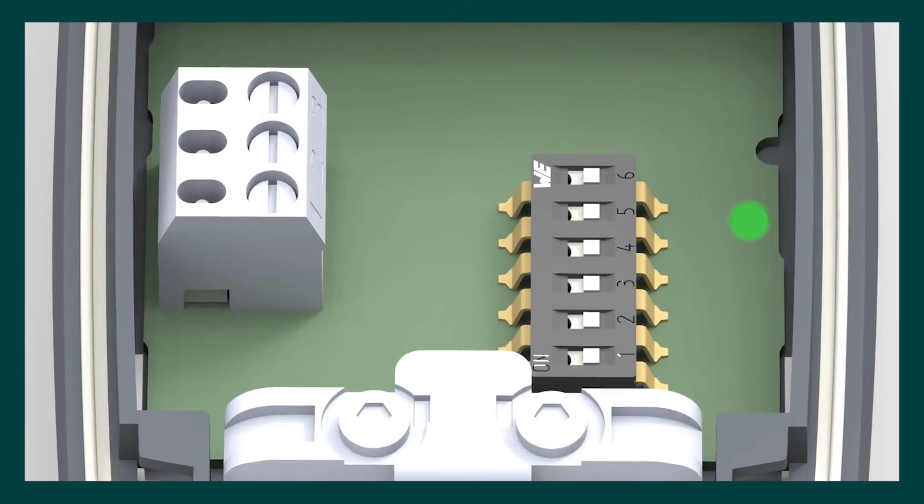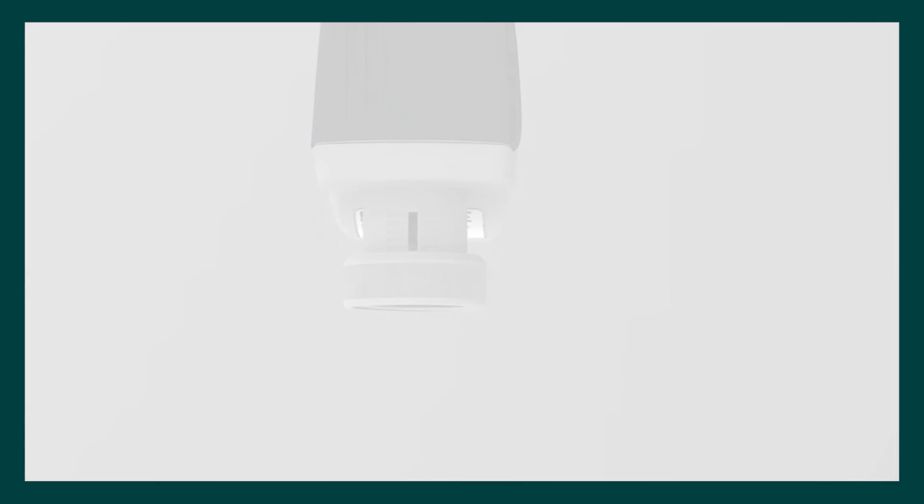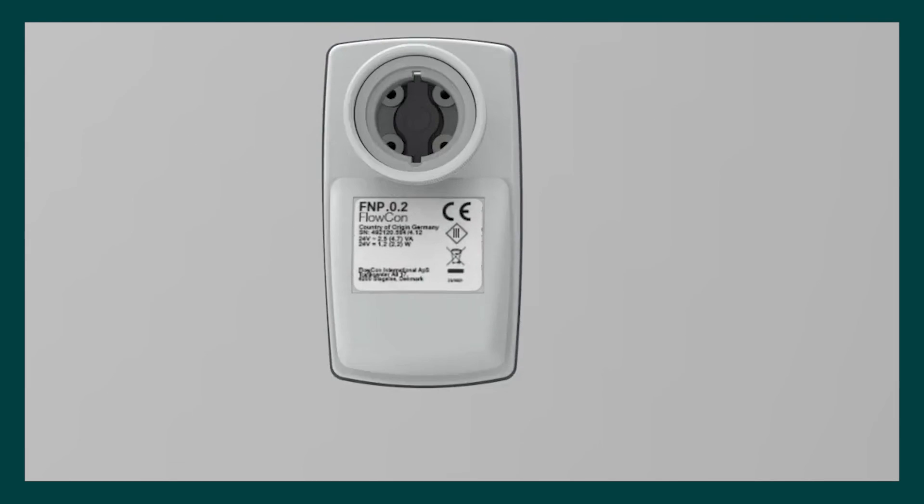Dipswitch 6 should be reset to the off position and should remain in this position whilst the actuator is not fitted to the PICV. Only remount the actuator onto the PICV in the fully open position. Once remounted, turn the power on.